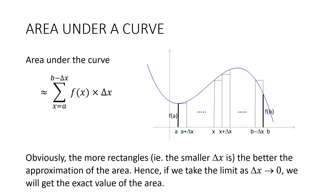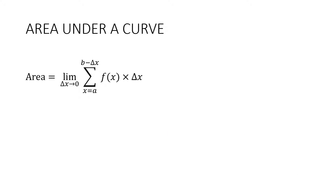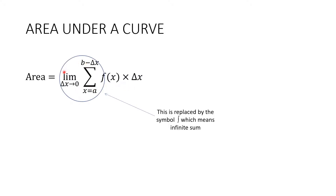Obviously, the more rectangles we have, the smaller delta x will be, and the better the approximation of the area. Hence, if we take the limit as delta x approaches zero, we're going to get the exact value of the area. So the actual area is equal to the limit as delta x approaches zero of that sum.